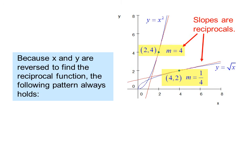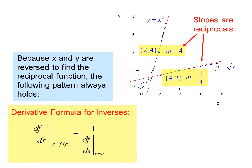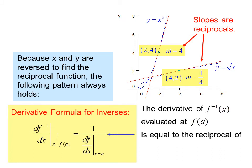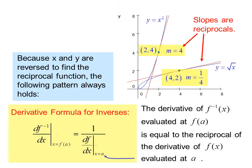Because x and y are reversed to find the inverse function, the following pattern always holds — the derivative formula for inverses: df inverse/dx evaluated at x equals f(a) equals 1 over df/dx evaluated at x equals a. That is, the derivative of f inverse evaluated at f(a) equals the reciprocal of the derivative of f evaluated at a.